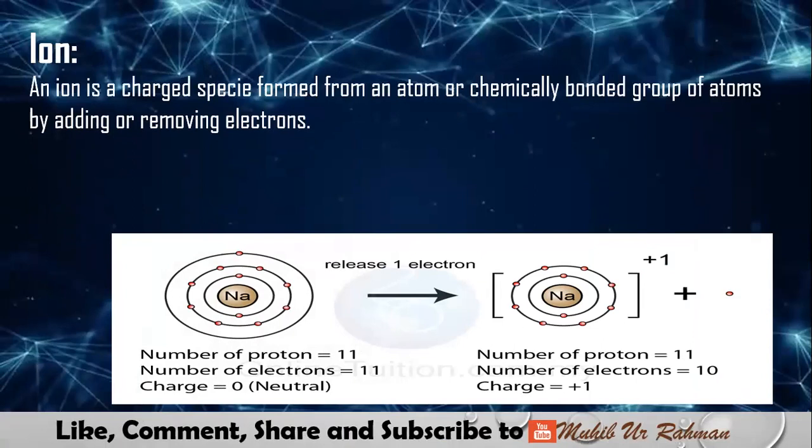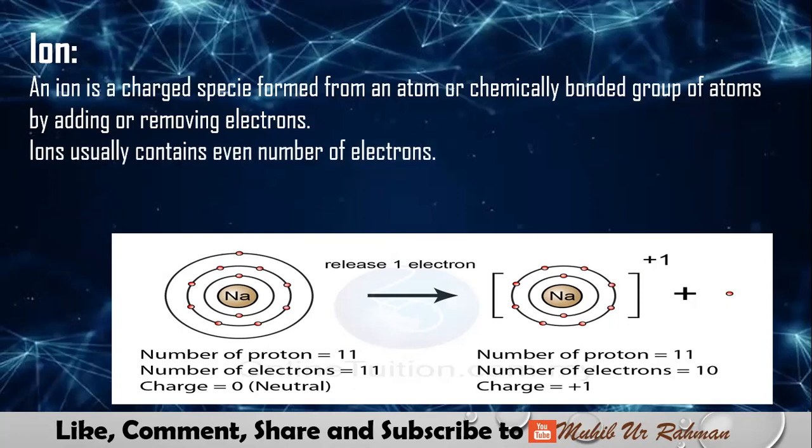Ion: A charged species formed from an atom or chemically bonded group of atoms by adding or removing electrons. When we remove or add an electron to an atom, the resulting species is called an ion. This can be a single atom or a chemically bonded group of atoms. Ions usually contain even numbers of electrons.